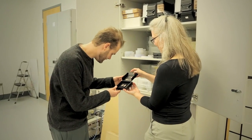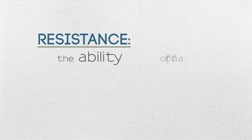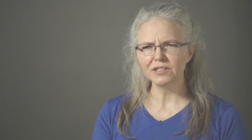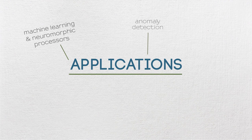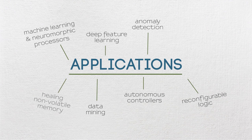The Memristor is a device that basically changes a property called resistance — the ability of a material to allow electron current flow. The great thing about a Memristor is you can change this resistance and keep it in that state, change it again to another state, and put it back to the original state. You can actually imagine so many applications for a device where you can utilize this change in resistance.